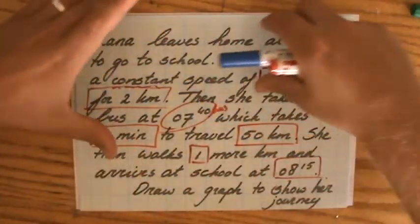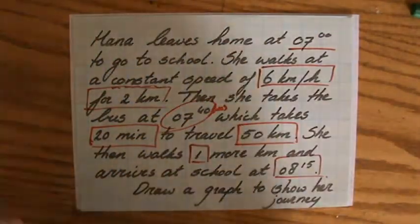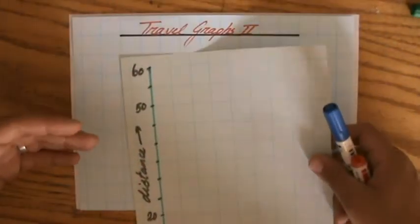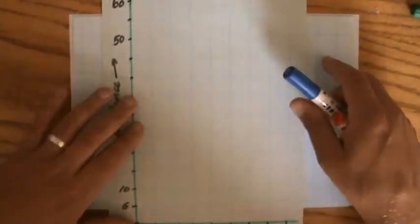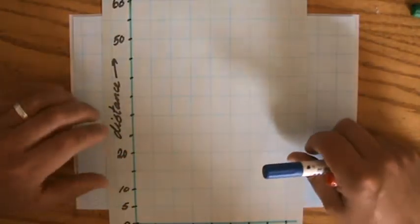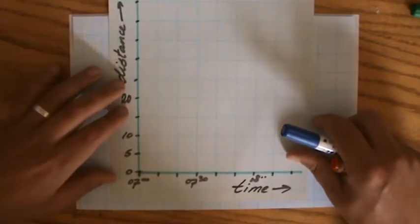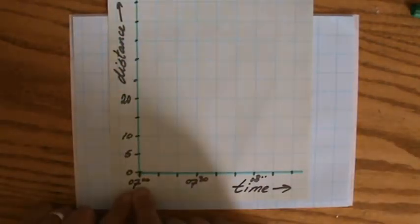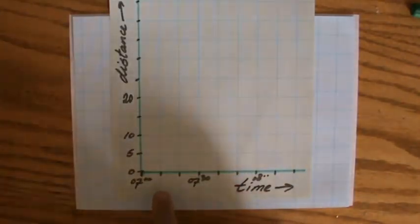I usually use the landscape position of my paper, but in this case I need to use portrait orientation because I can't fit everything otherwise. I'll be moving the paper around to use as much space as I can. I already prepared parts of the axis because she leaves at seven and arrives at 8:15.